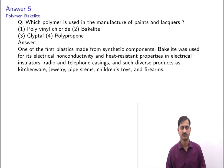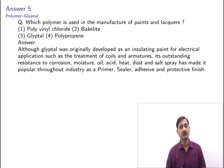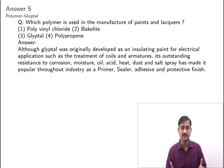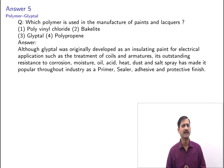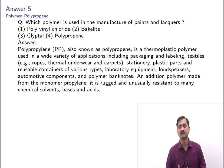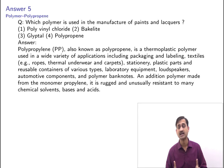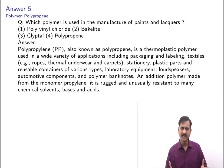Glyptal was originally developed as an insulating paint for electrical applications such as treatment of coils and armatures. Its outstanding resistance to corrosion, moisture, oil, acid, heat, dust, and salt sprays has made it popular throughout industry as a primer, sealer, adhesive, and protective finish. Polypropylene (PP), also known as polypropene, is a thermoplastic polymer used in packaging, textiles, stationery, plastic parts, laboratory equipment, loudspeakers, automotive components, and polymer banknotes. It is rugged and unusually resistant to many chemical solvents, bases, and acids. Hence, glyptal is used in paints and lacquers.